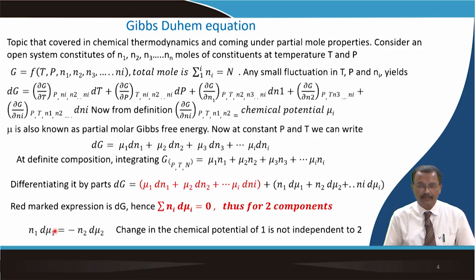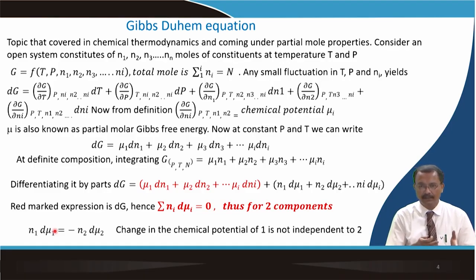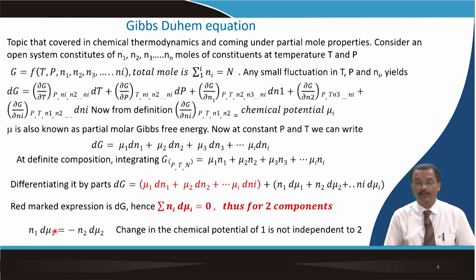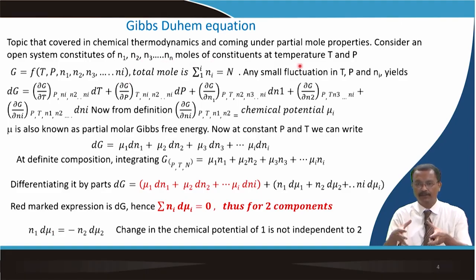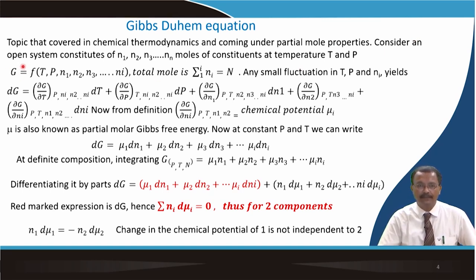In chemical thermodynamics, this is a concept that comes under partial molar properties. If you consider an open system where the number of moles is n₁, n₂, n₃, up to nₙ moles, constituted at a particular temperature and pressure, you can write the free energy as a function of temperature, pressure, and these moles. The total moles is the summation of n₁, n₂, etc., which we can call capital N.